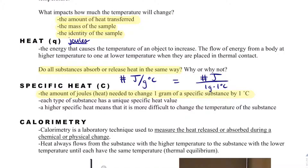A higher specific heat value means that the substance needs more energy to change its temperature. Generally, metals and good conductors of heat have low specific heat values, while non-metals have high specific heat values. One of the more common specific heat values we'll see is water, which has a specific heat of 4.184 joules per gram degrees Celsius — but that's specifically for liquid water. If we have ice or steam, the specific heat will be different.